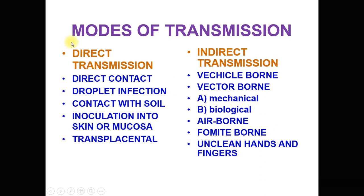Now we will see the different modes of transmission. They can be classified as direct transmission and indirect transmission. Direct transmission includes direct contact, droplet infection, contact with soil, inoculation into skin or mucosa, and transplacental. Indirect transmission includes vehicle-borne, vector-borne — which can be mechanical and biological — air-borne, fomite-borne, and unclean hands and fingers.